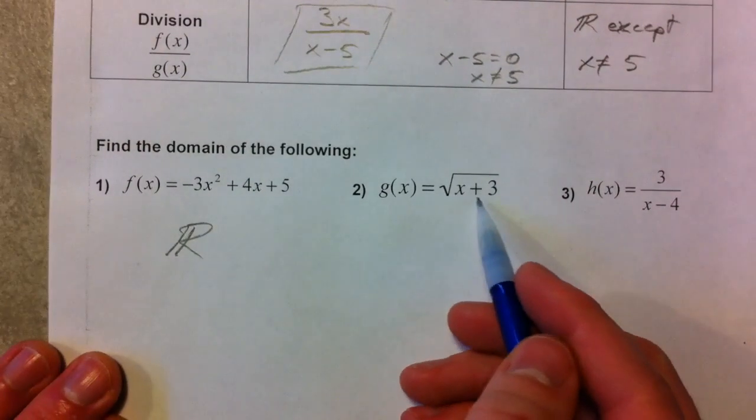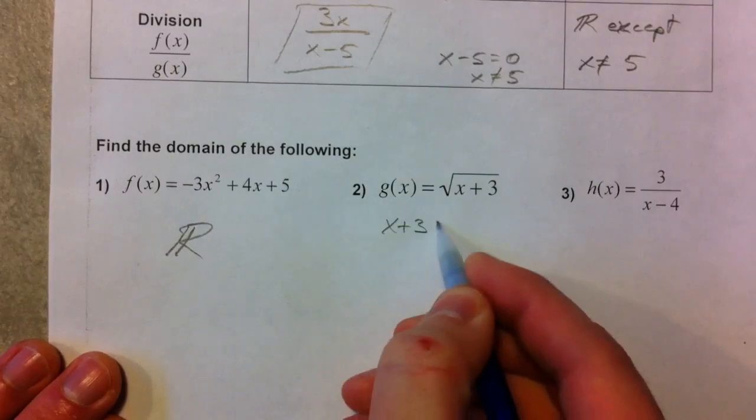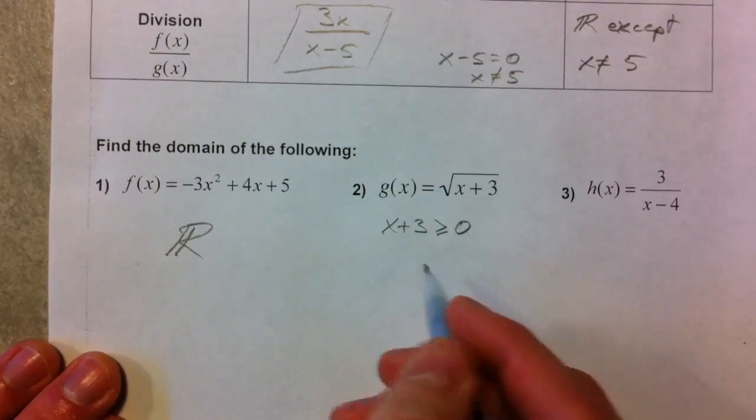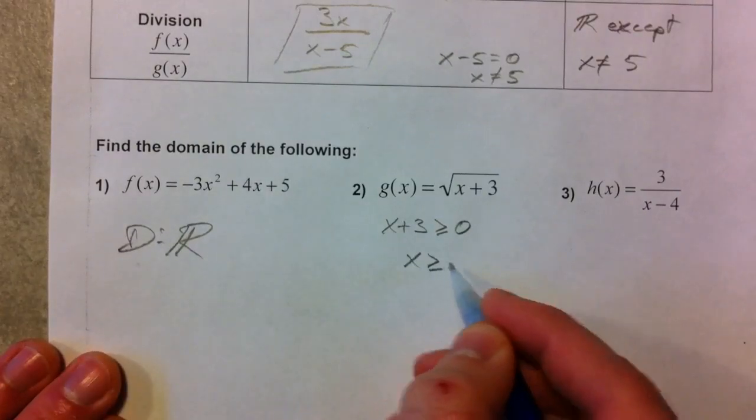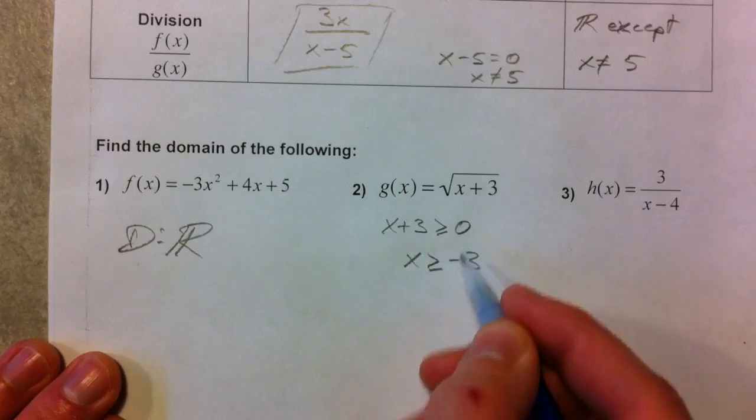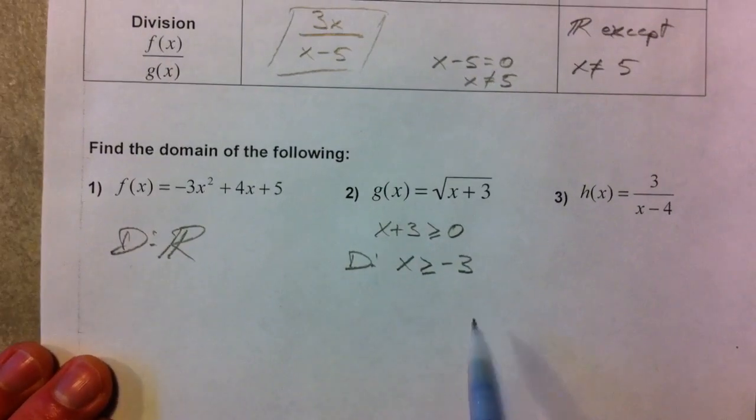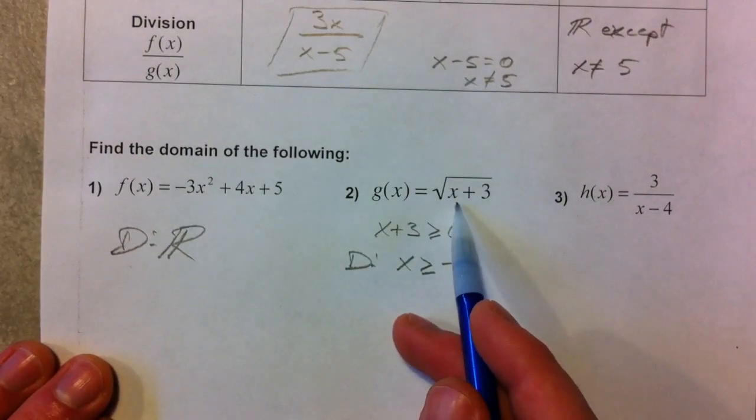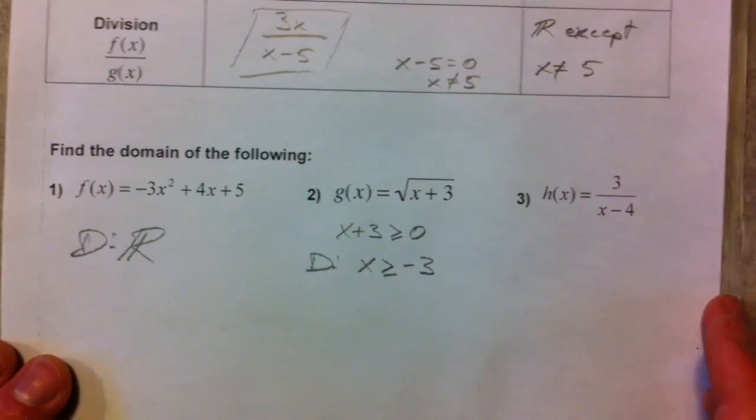On the last one, the square roots had to be greater than or equal to 0. And so x plus 3 has to be greater than or equal to 0. And so our domain is x is greater than or equal to negative 3 if you subtract the 3 to both sides. So domain has to be greater than or equal to negative 3. If you plug in a negative 4, negative 4 doesn't work because you get a negative 1. Square root of negative 1 is not a real number.